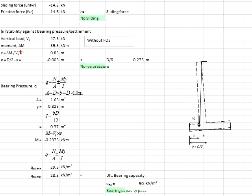The x is obtained by dividing the total moment by the total vertical load, and the eccentricity is determined as 0.005 m. Compared to d/6 which is 0.275 m, this means the resultant is within the middle third and no uplift is expected from this retaining wall.